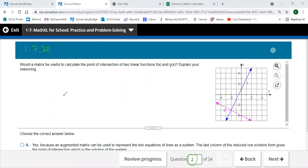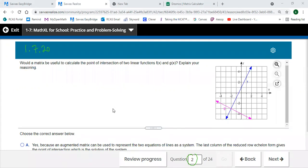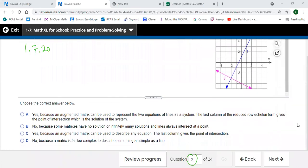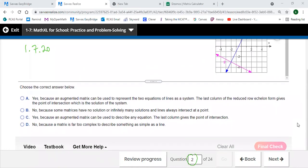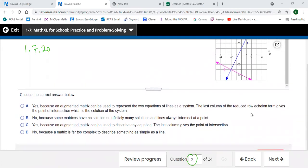All right, so this problem says: Would a matrix be useful to calculate the point of intersection of two linear functions? Let's take a look. So there's an example of the two graphs. And then, choose yes because an augmented matrix can be used to represent two equations of lines as a system, and the last column of the reduced row echelon form gives the point of intersection.